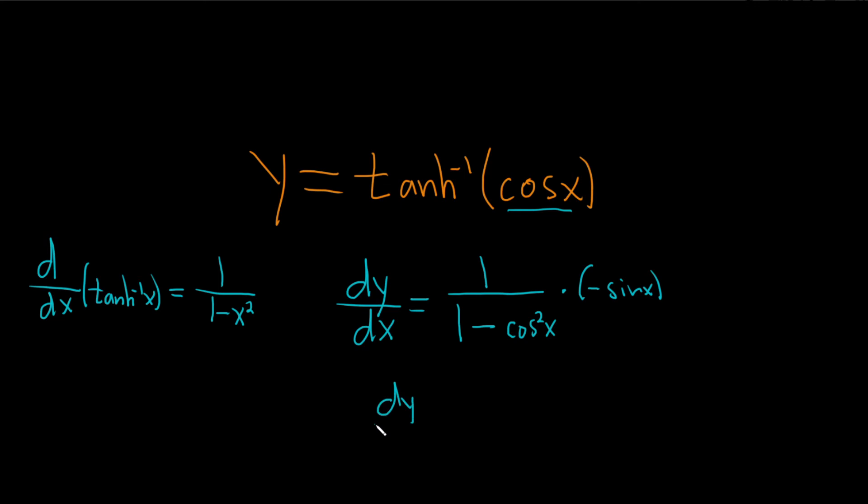This is dy dx equals, let's put the negative sign upstairs, so negative sin x, and the bottom is an identity. I mean you could leave it or you could keep going, maybe let's just keep going. So 1 minus cosine squared is actually sin squared.